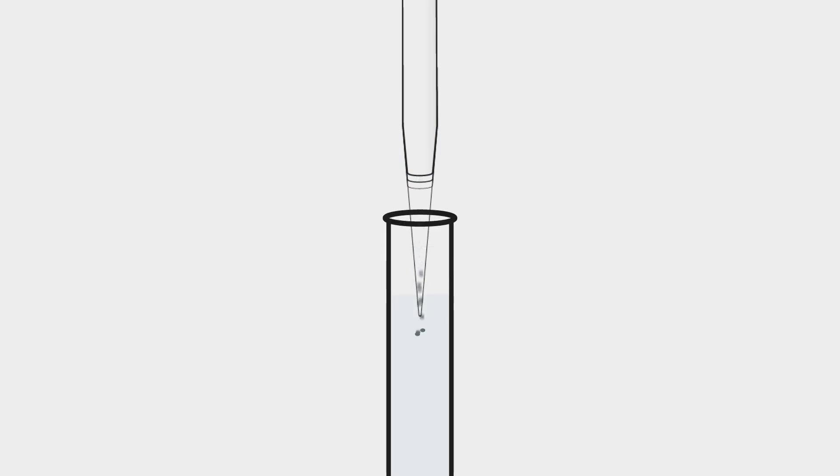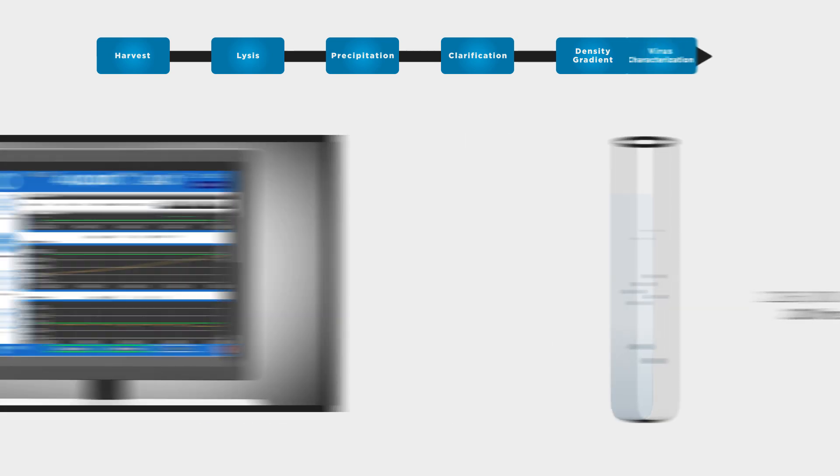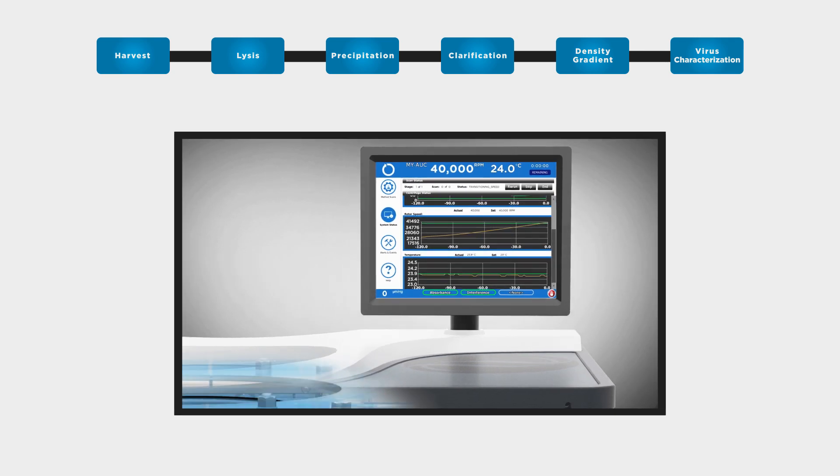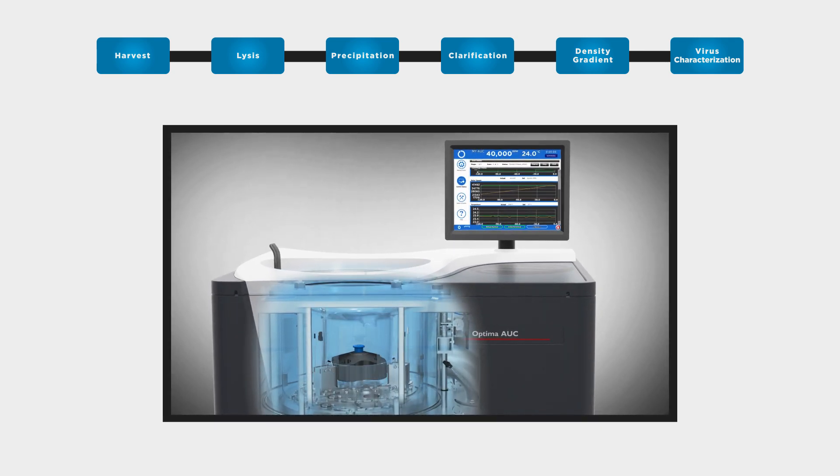It is then subjected to rate zonal centrifugation to separate viral particles on the basis of size and mass. Analytical ultra-centrifugation is the preferred choice to characterize the quality and purity of viral particles.